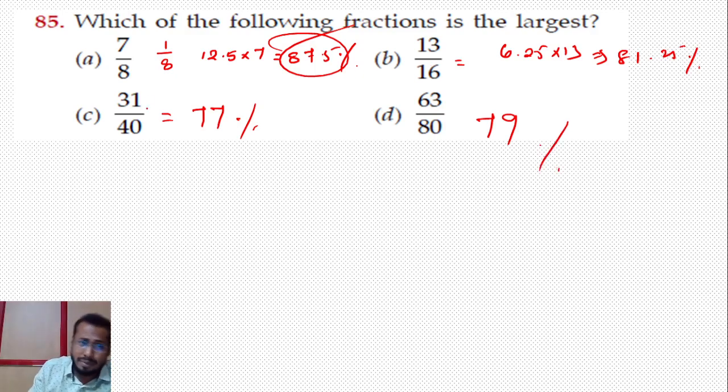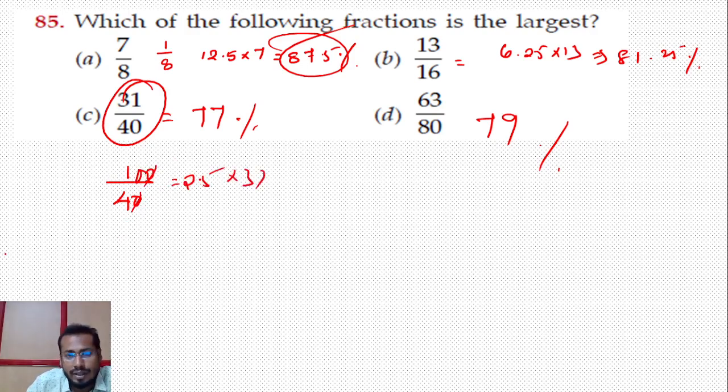87.5% is the largest one. If you look at the percentage, it will be easier. For denominators, 1 by 40 would be 2.5%. This is the concept. Converting everything into fractions or percentages makes it simple.